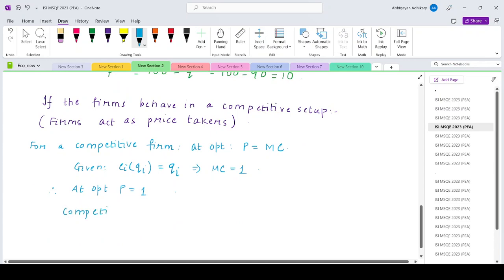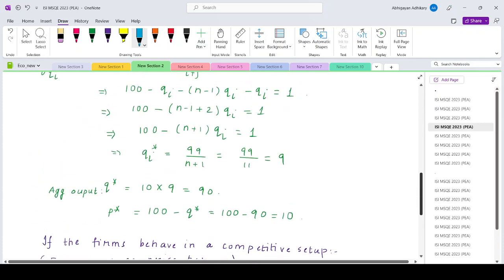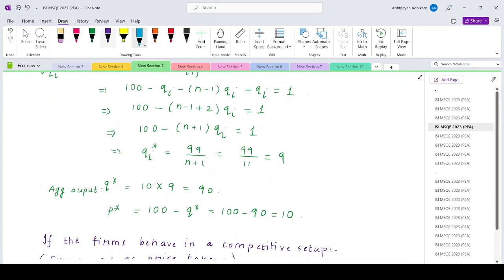We'll take it from the demand function, so q would be 100 minus p, so that would be 99. If you compare the figures, what did we get in the Cournot setup? The aggregate output would be 90.